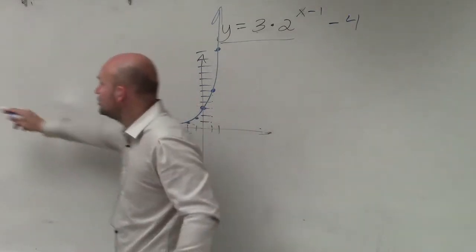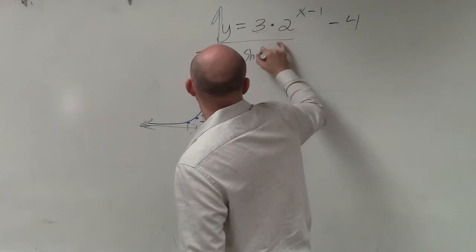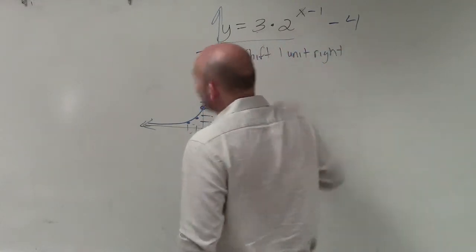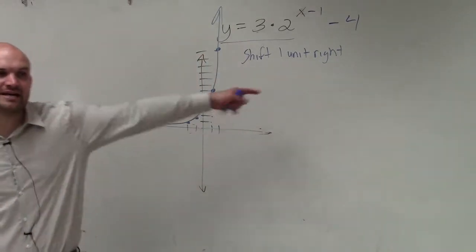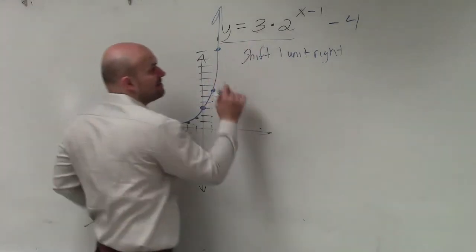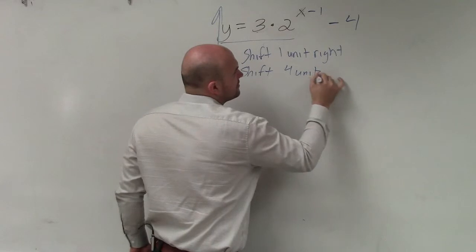And as I mentioned, identify, write them down. So you're going to shift one unit right. Then, the next transformation is minus 4, which would be your k. k tells you to shift the graph up or down. So since that's minus 4, you're going to shift 4 units down.